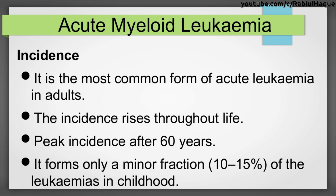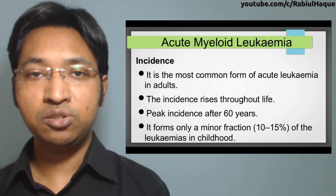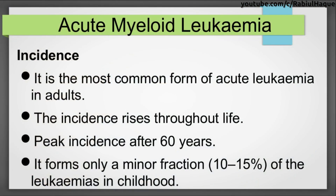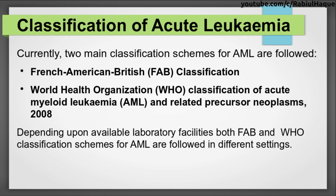Regarding its incidence: AML is the most common form of acute leukemia in adults. The incidence rises throughout life with a peak after 60 years. Although it is predominant in adults, it can also be seen in childhood — it forms only a minor fraction of 10 to 15% of leukemias in childhood.